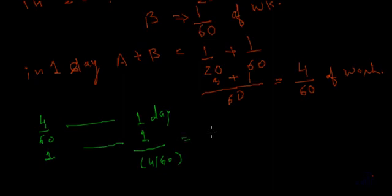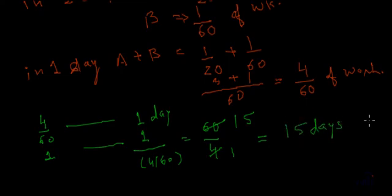And this is equal to 1 divided by 4 by 60. That means 1 multiplied by the inverse of 4 by 60. And the inverse of 4 by 60 is 60 by 4. And 60 by 4 multiplied by 1 is 60 by 4.